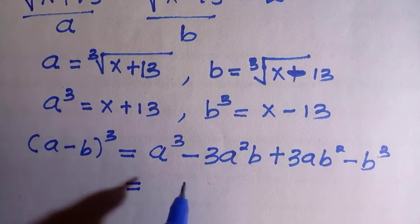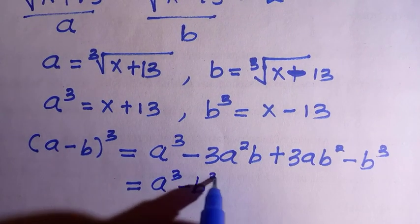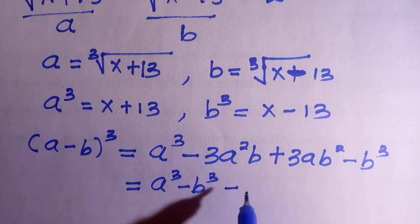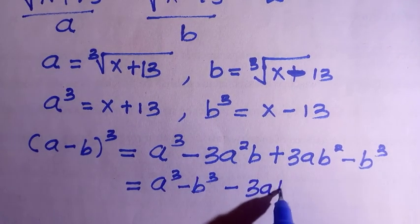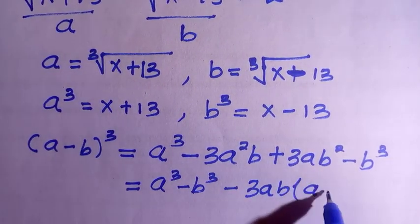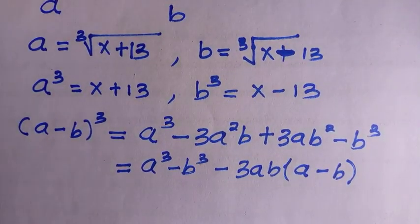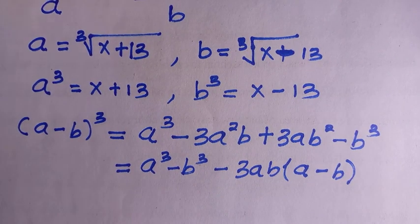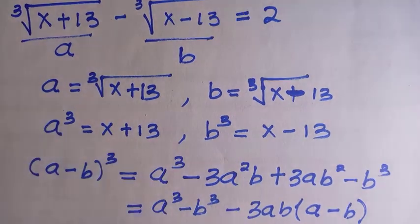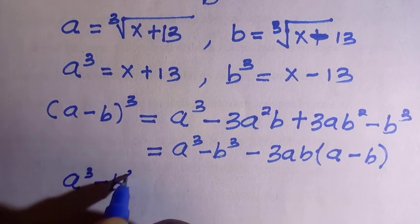Now I combine the a³ and b³ terms. We have a³ minus b³, and from the remaining terms, 3ab is common, so factoring that out gives us the grouped form. We need a³ minus b³, which hasn't been computed yet, so let's do that by subtracting the two equations.